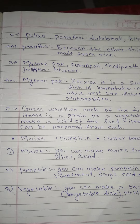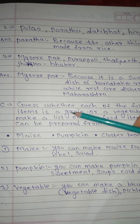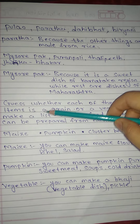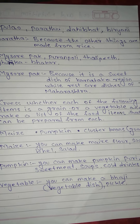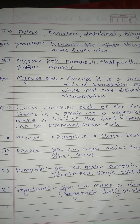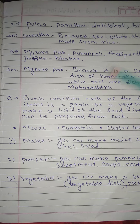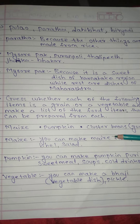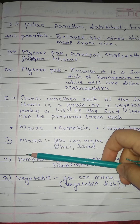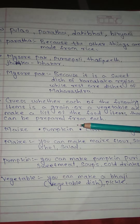Section C: Guess whether each of the following items is a grain or a vegetable, and make a list of food items that can be prepared from each: Maize, Pumpkin, Cluster Beans, Gawar. No. 1: Maize — you can make maize flour, soups, bheer, salad.